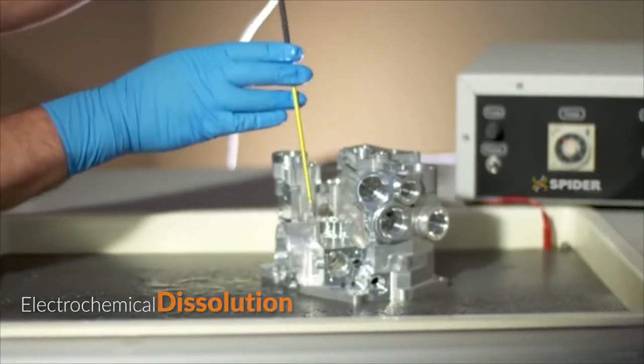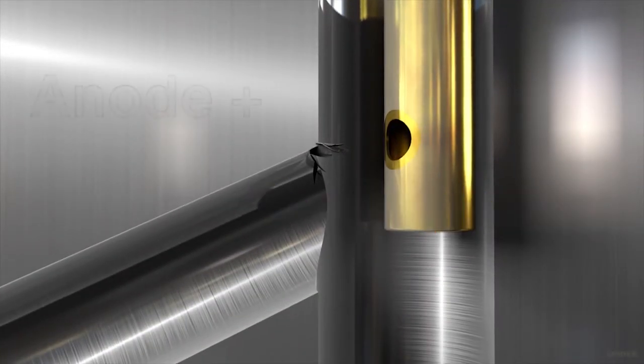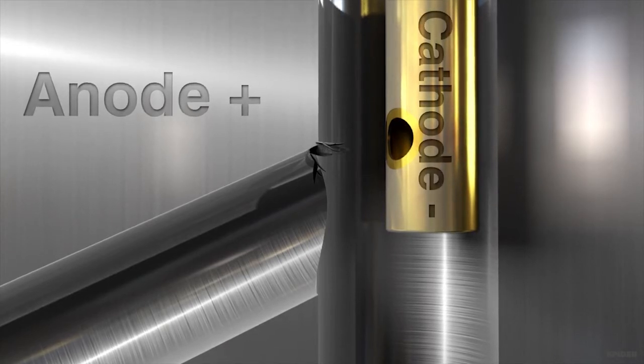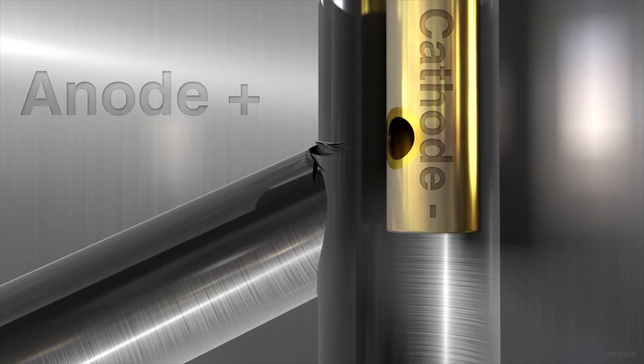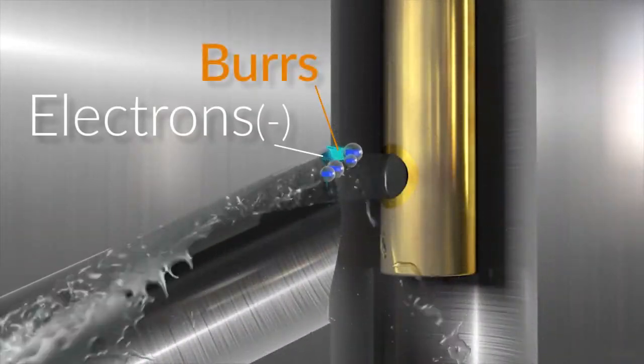The electrochemical dissolution process can be best described as reverse electroplating. A positive charge is connected to the part, making it the anode, and the negative charge or cathode is placed near the area to be deburred. The electrons carried in salt water focus activity on the burrs instead of the parent material.